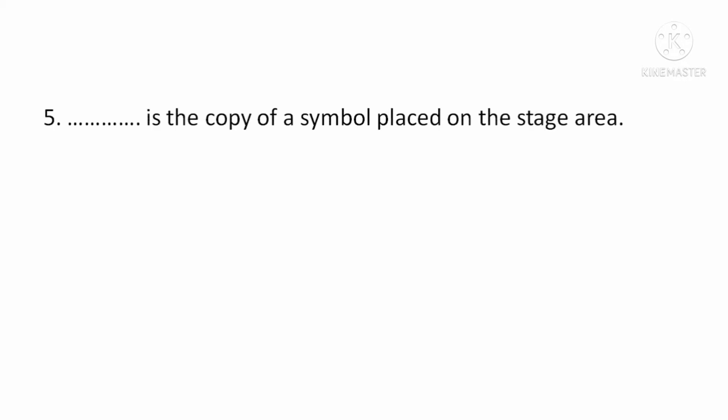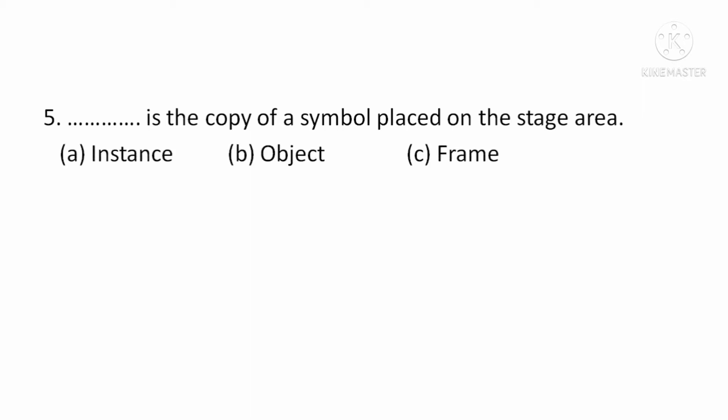Next, is the copy of a symbol placed on the stage area? Means, यह symbol का copy होता है जो stage area पर होता है. इसे कहते हैं, Option A: Instance, Option B: Object, Option C: Frame.